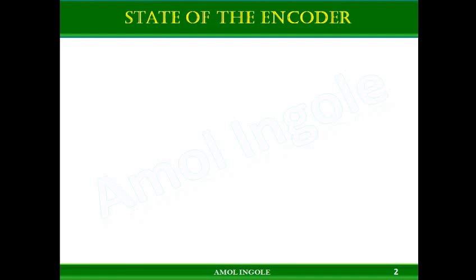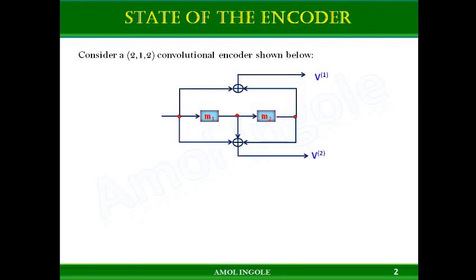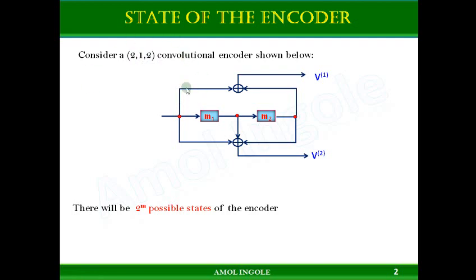Before we start discussing the tree diagram, let's see what is the state of the encoder. To understand the state of the encoder we will consider one convolution encoder shown on the screen. You will see that there are two memory units used, two outputs, and block size is 2,1,2. The state of the encoder actually depends on the number of memory units.